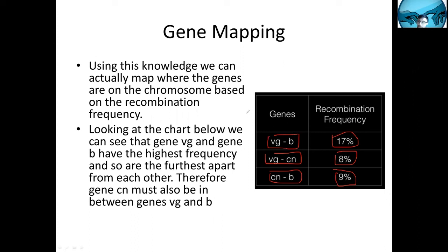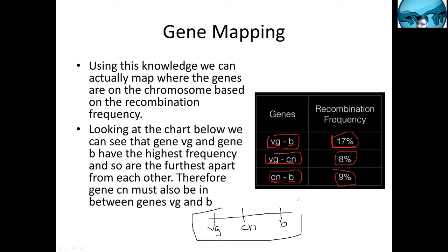Using those recombination frequencies, we can map where genes are physically located on a chromosome. Looking at the chart, genes vg and b have the highest frequency of recombination, so they are the furthest apart. vg and cn have a lower frequency, and cn and b also have a lower distance. Therefore cn must be between vg and b, allowing us to create a chromosome map showing the order: vg — cn — b.